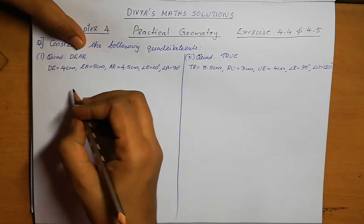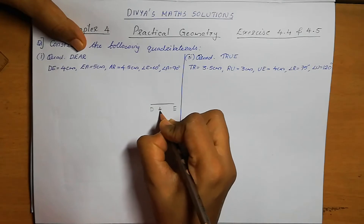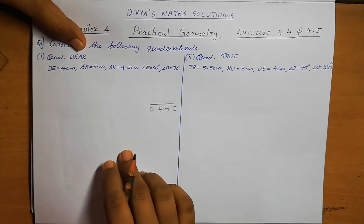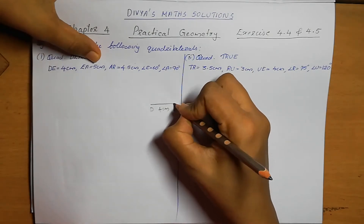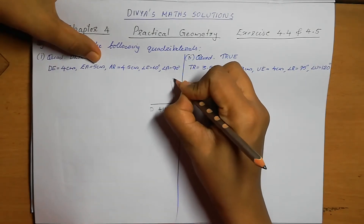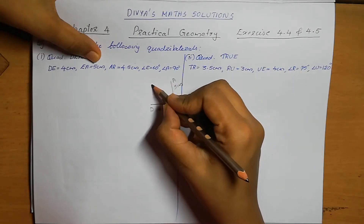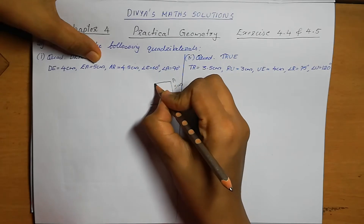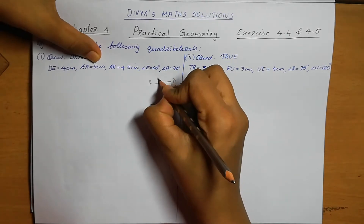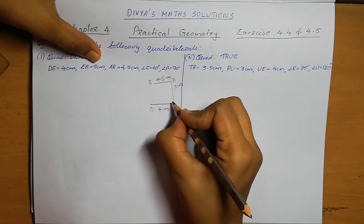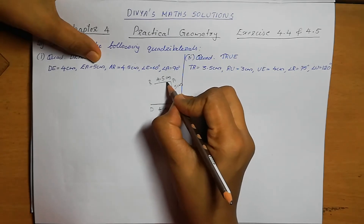In the rough diagram: DE is 4 cm, EA is 5 cm, AR is 4.5 cm. Angle E is 60 degrees and angle A is 90 degrees. This is the quadrilateral DEAR we are going to construct.